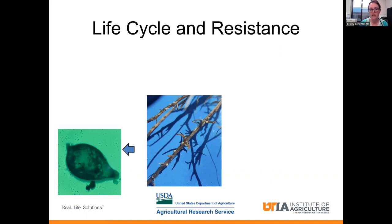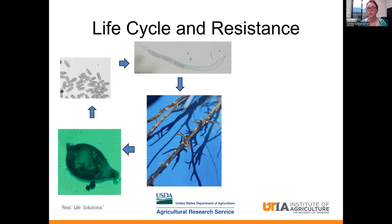And this is what you can see under the microscope — you can actually see some of the eggs within the cyst. And this is what the eggs look like. Within the egg is the juvenile worm. This is the stage that you might think of when you think of a worm or a soybean cyst nematode. This juvenile is what's going to be in the soil actively looking for a root. That nematode will penetrate the root, and then the life cycle will begin.